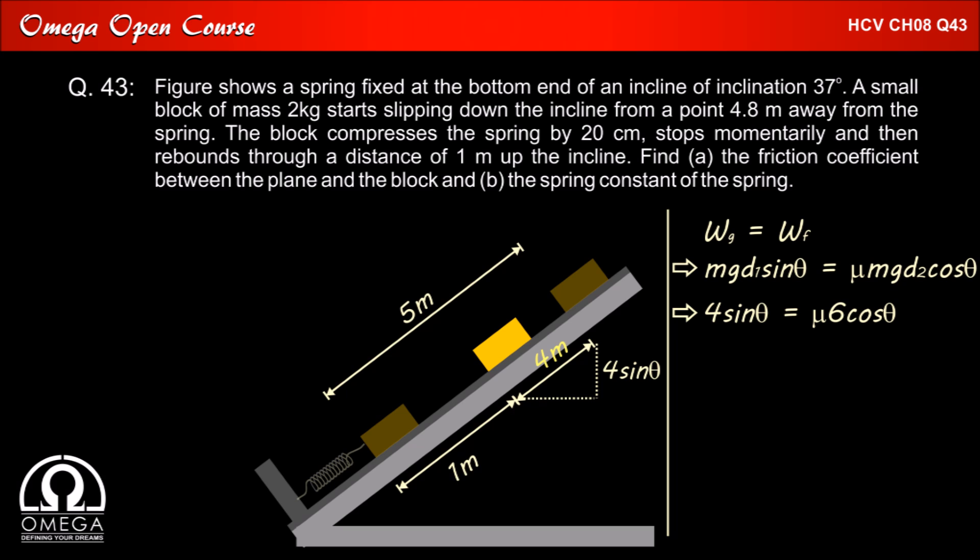Putting these values we get 4 sin theta is equal to mu into 6 cos theta. Which implies mu is equal to 2 by 3 tan theta. Tan theta for 37 degrees is 3 by 4 thus mu is equal to 0.5. This is our answer for the first part.